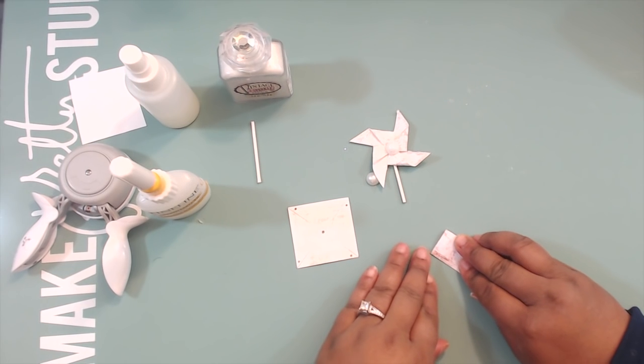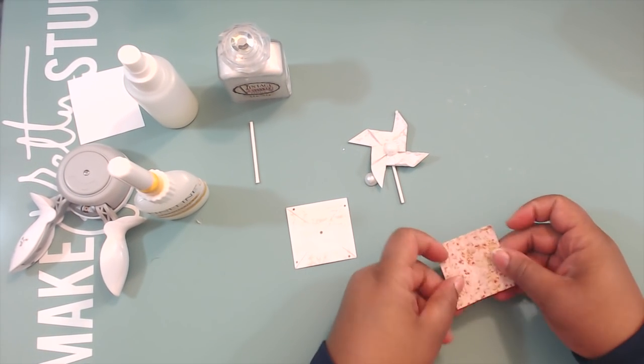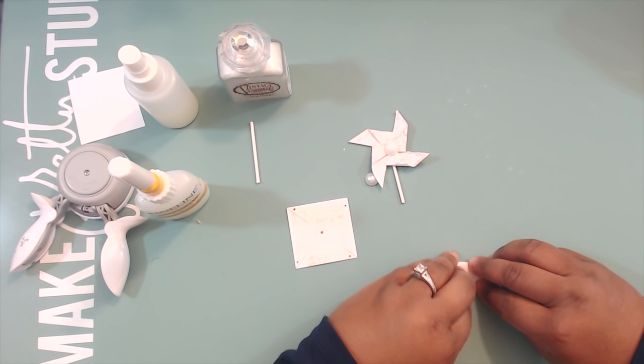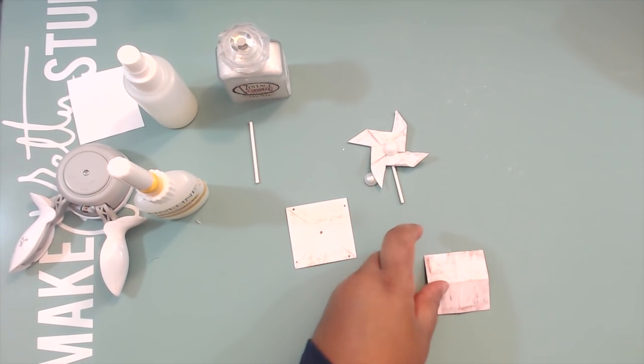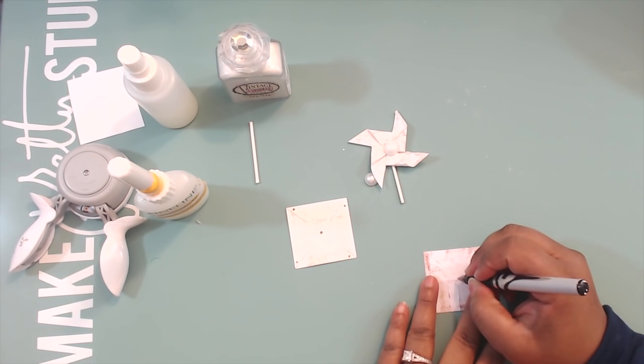This is a two by two. Then you fold it in half, length and width. Open it up and fold it back the opposite direction so you can find the center. I'm going to circle it. You can maybe use a pencil if you want to, but just circle the center.